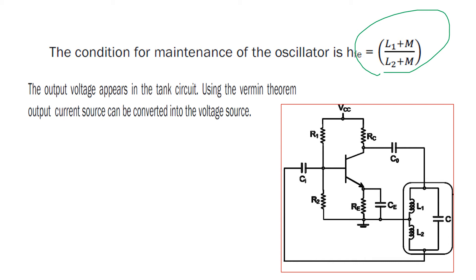The output voltage appears in the tank circuit. Using the Vermin theorem, the output current source can be converted into the voltage source.